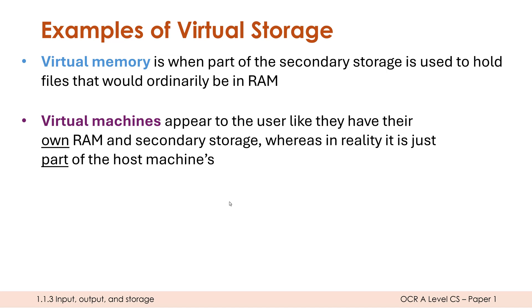Two final examples I want to mention are virtual memory and virtual machines - both are examples of virtual storage, which will be covered properly in future videos. Virtual memory is annoying to have as a term alongside virtual storage since memory and storage are already vague terms, but arguably virtual memory is an example of virtual storage because it makes a program appear like it's in RAM when in reality it's physically stored in secondary storage - so again we have that trickery. Virtual machines are in some ways fake computers which appear like they've got their own dedicated RAM or storage, but in reality this is borrowed from what's called the host machine. We'll look at these in more detail, but they are other examples of virtual storage to have in your head.